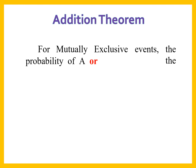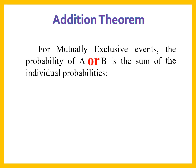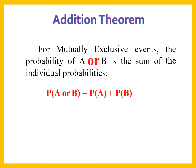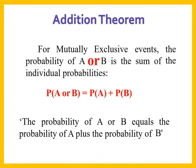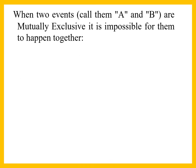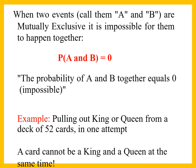For mutually exclusive events, the probability of event A or event B is the sum of their individual probabilities. So probability of A or B is equal to probability of A plus probability of B. When two events A and B are mutually exclusive, it is impossible for them to happen together — meaning probability of A and B together equals zero, or is impossible.